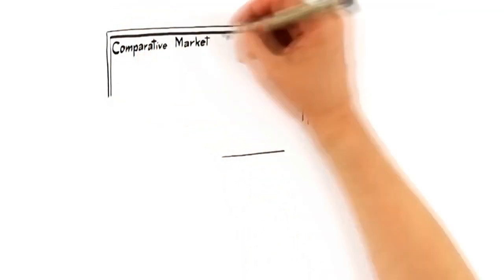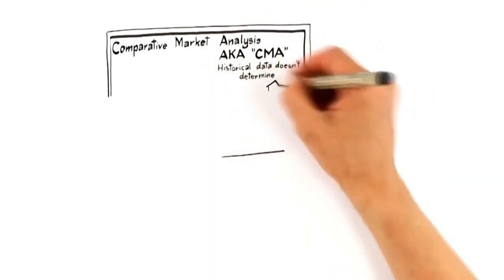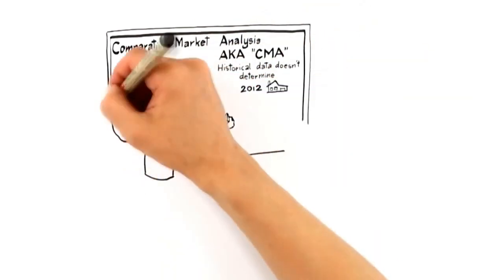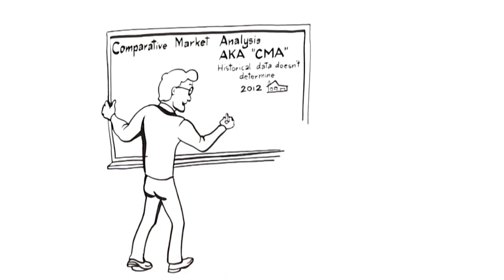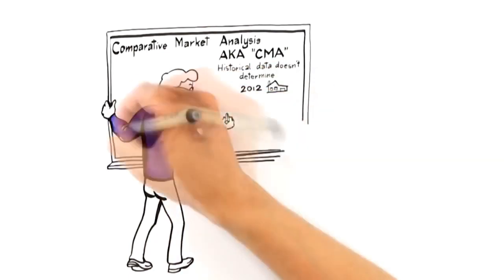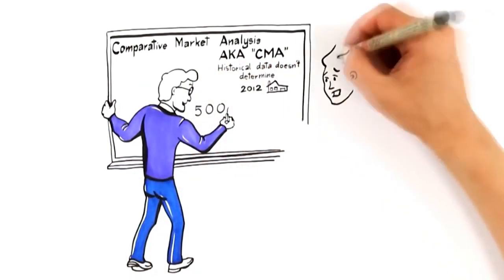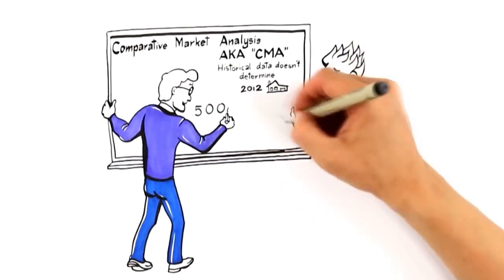So let's start with number one, Pricing Expertise. Traditionally, agents price homes using what is called a Comparative Market Analysis, also known as a CMA. This establishes the value of your home by comparing it to historical sales.